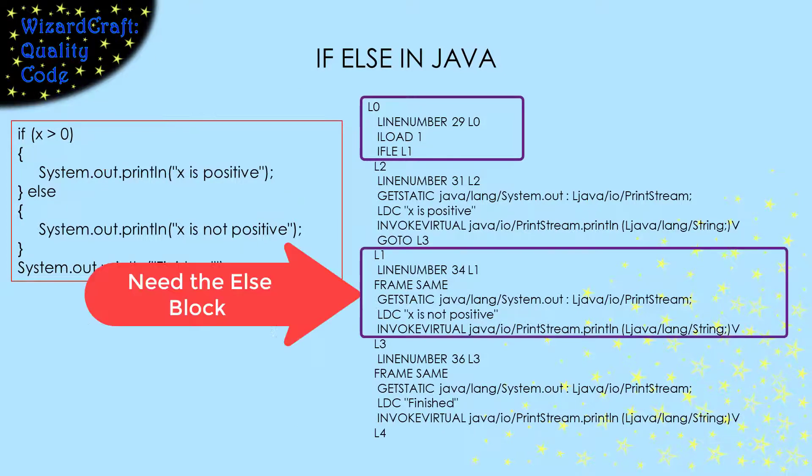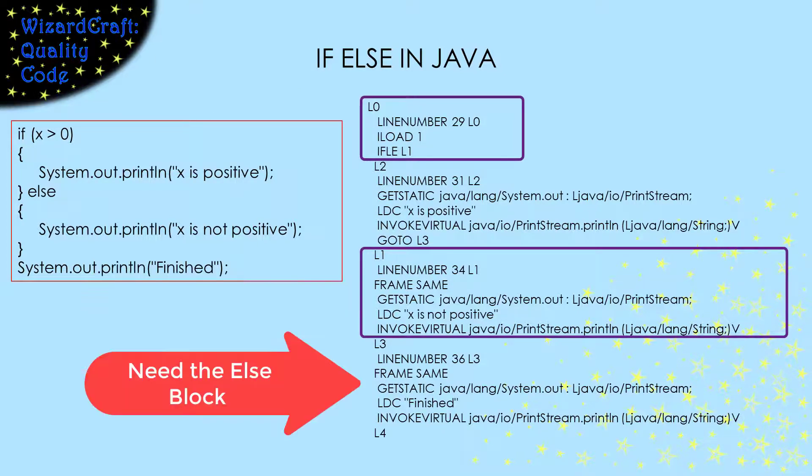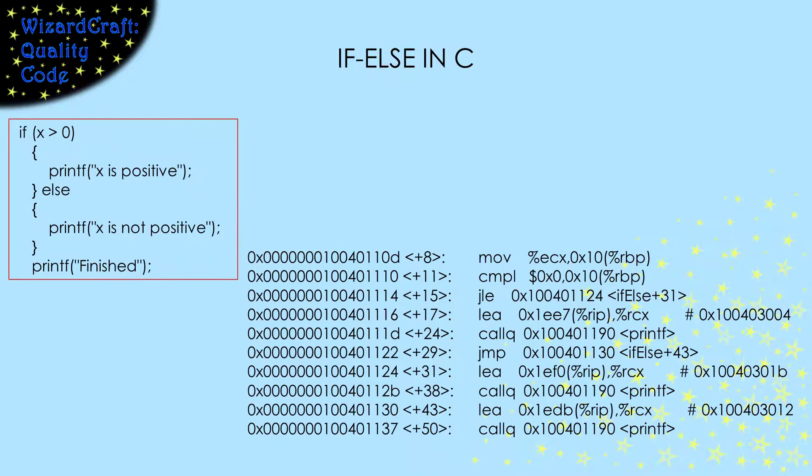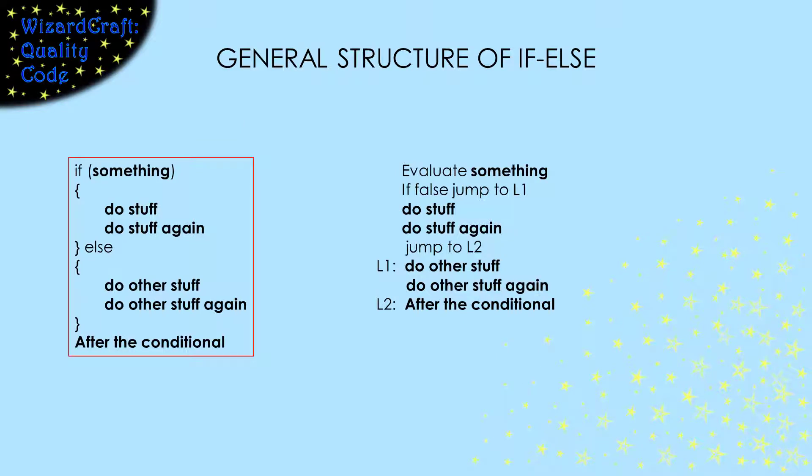We can see the same general structure for an if-then-else compiled in C. We evaluate the condition, and then there's a conditional jump to the else block. At the end of the then block, there's an unconditional jump to skip the else block. So we can generalize how if-then-else statements are translated into machine code. You can find evaluating the condition, the then block, and the else block. There's a conditional jump, after evaluating the condition, that takes us to the else block if we should go there. If we don't take that jump, we'll execute the then block, and then jump past the else block.